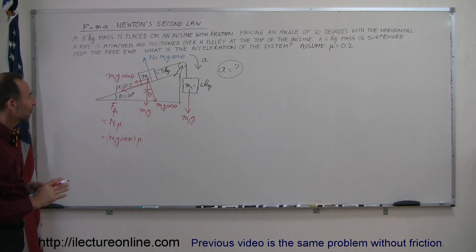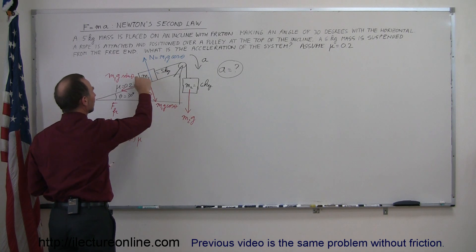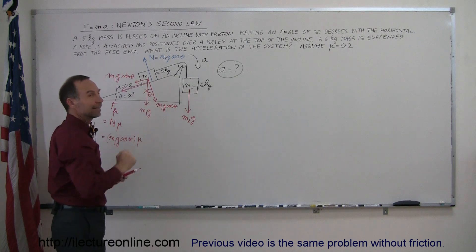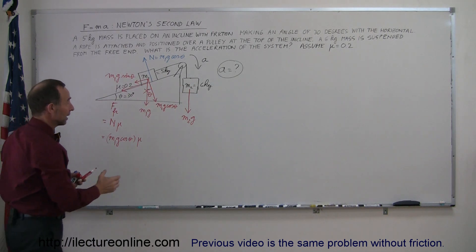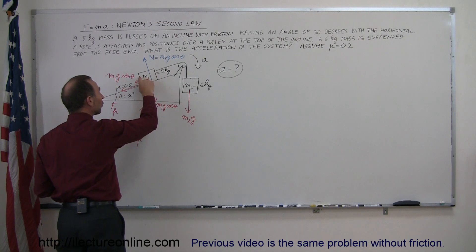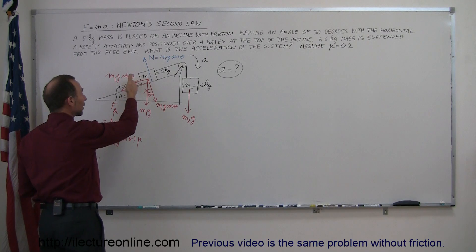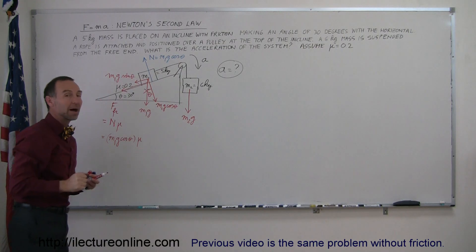So now we have three forces. These two forces cancel out. We have this force, this force, and this force affecting the acceleration of the system. This force will be aiding in the acceleration, these two forces will be opposing the acceleration. That causes them to be in the negative direction, and causes this force to be in the positive direction.